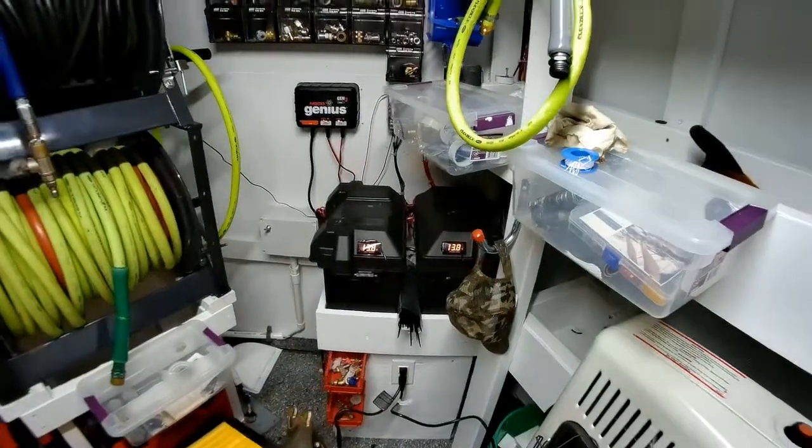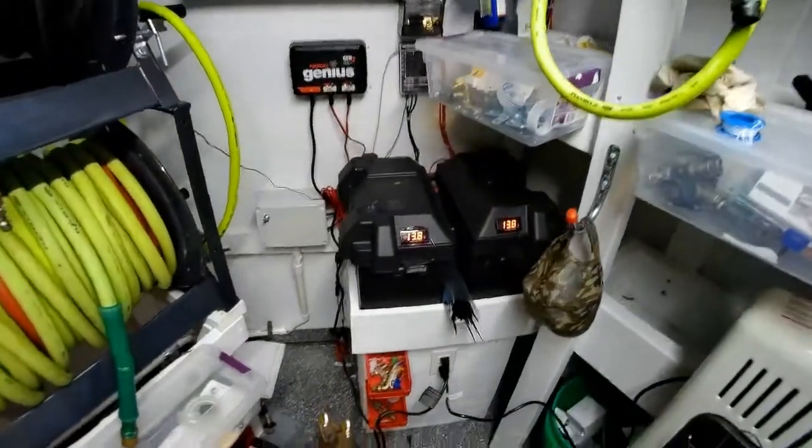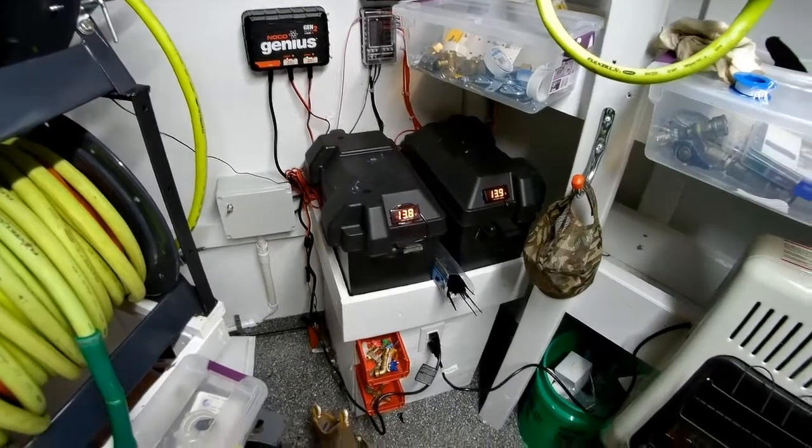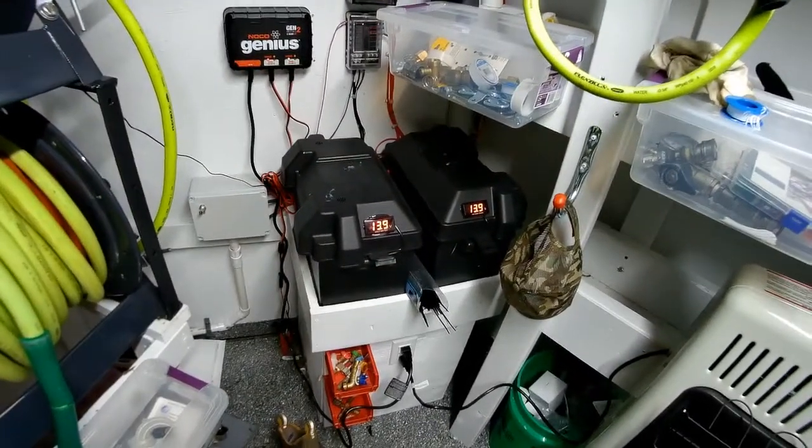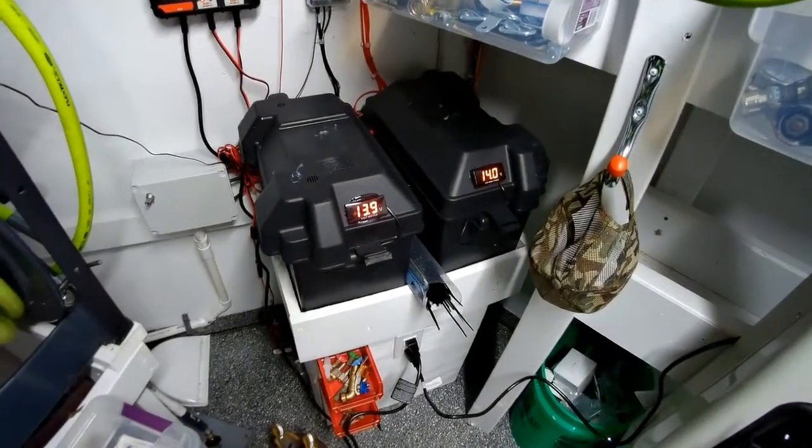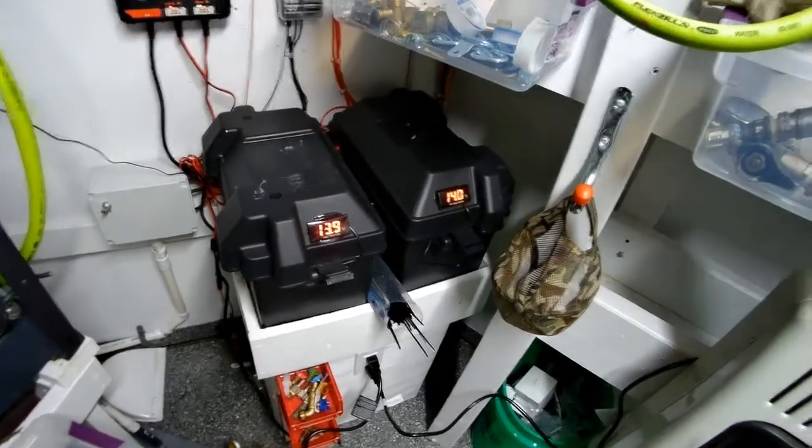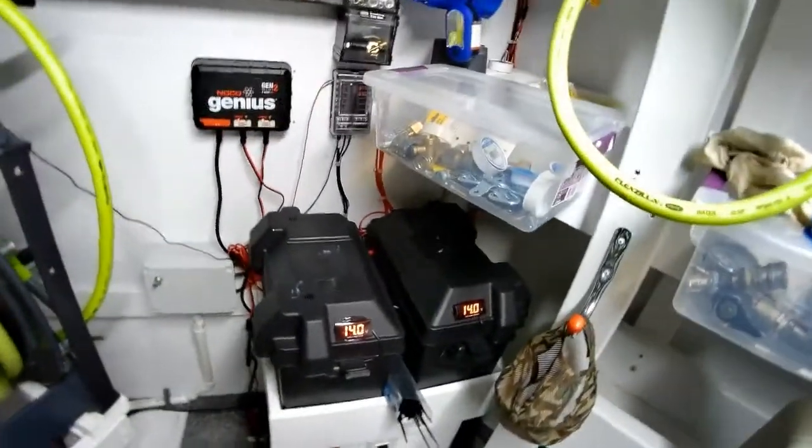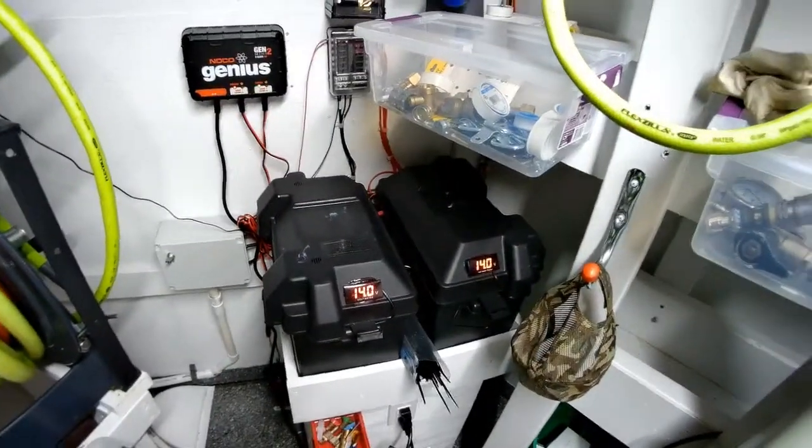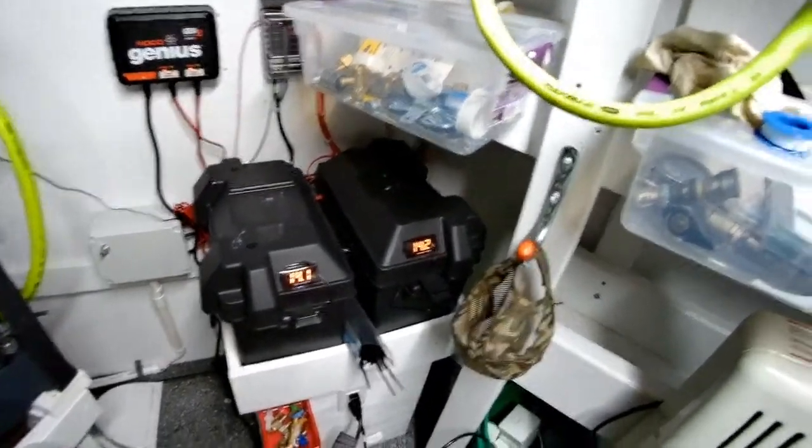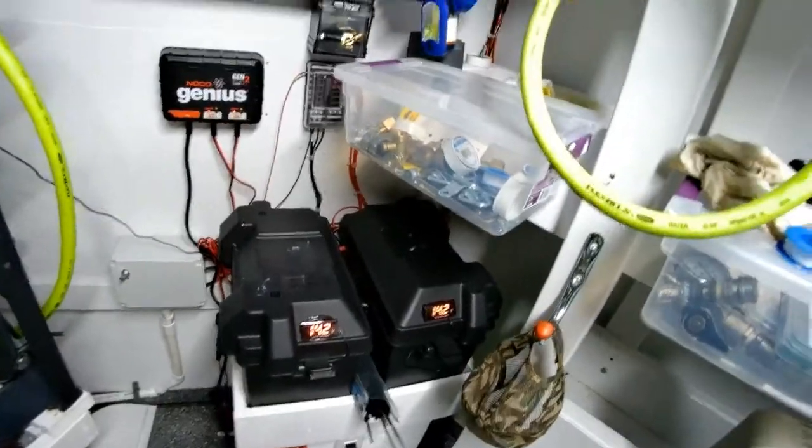With this trailer, it has a 12-volt system and also a 115-volt system. I've got two 12-volt batteries up front here. They're wired in parallel and hooked to a battery tender on the outside. I've got an RV outlet where I can plug in 110 volts and charge these two batteries with this tender.